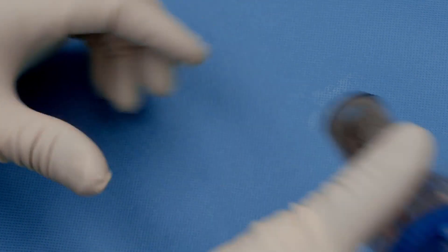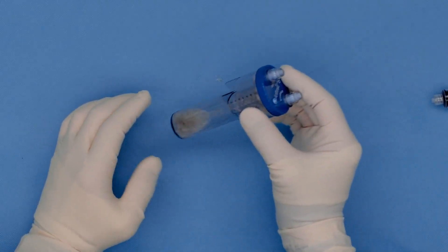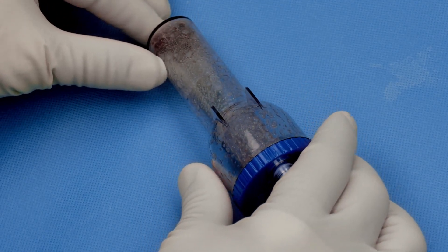After injection of the 4 ml of ACP, you shake the thrombinator for 5 seconds and then put it back flat on the table with the injection site down.